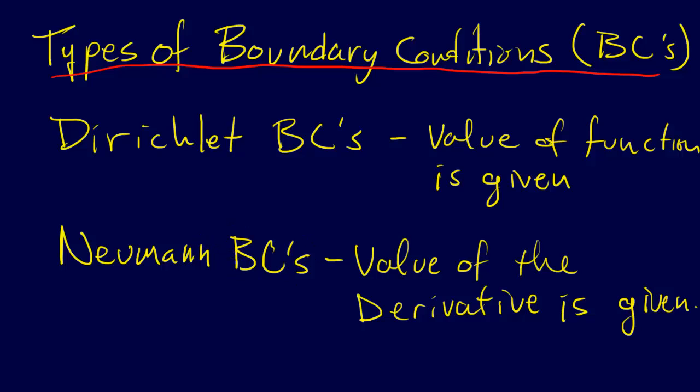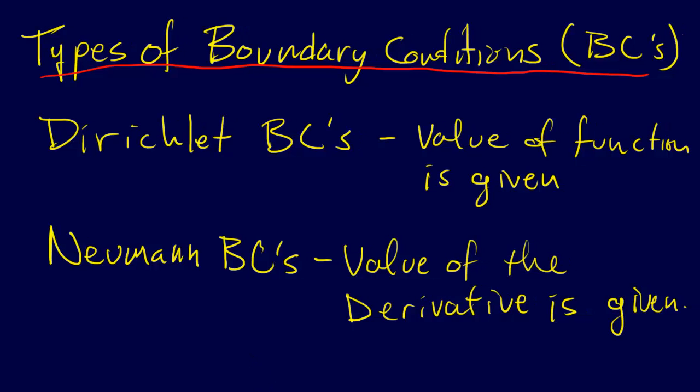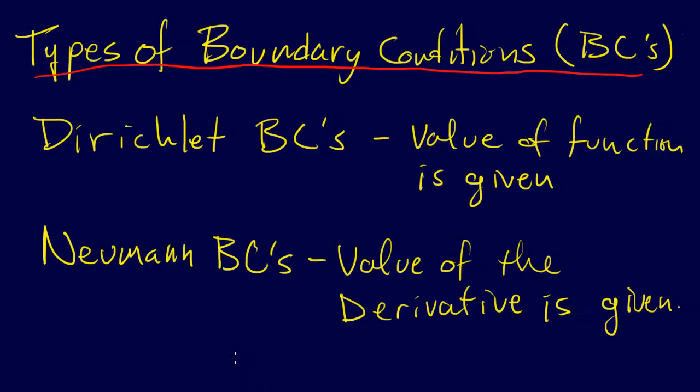Maybe we're given the value of the function at one point, and the value of the derivative at another point, and we may be given them anywhere on the interval that we care about, and so these are then the different types of boundary conditions, and all of these then generally we're going to call boundary value problems. So that's BVPs.